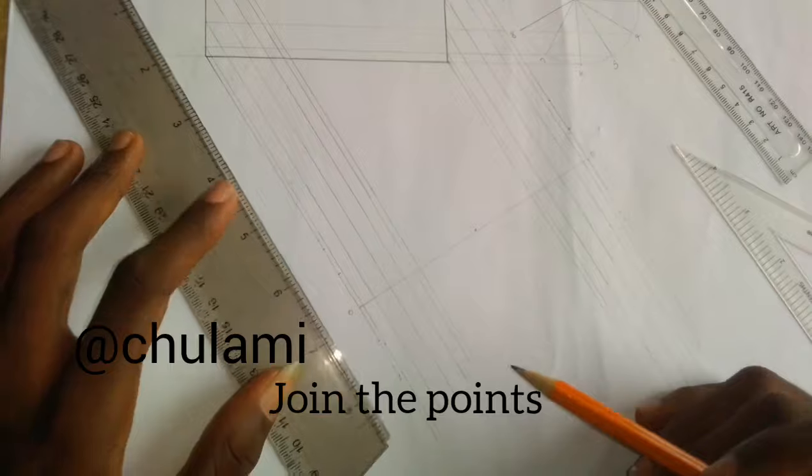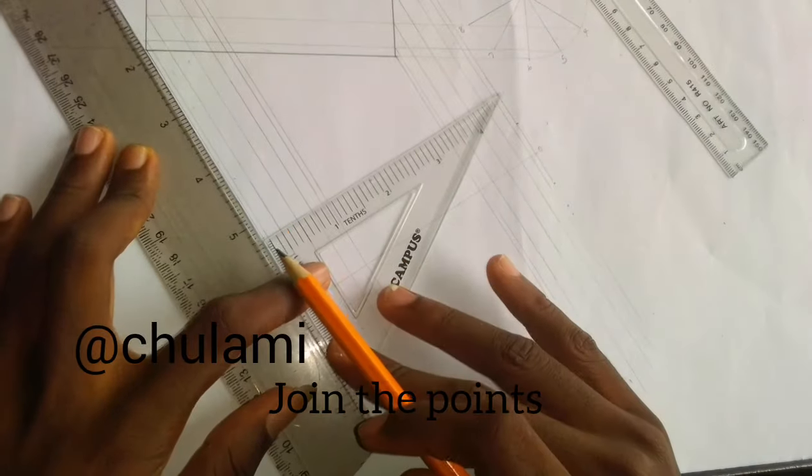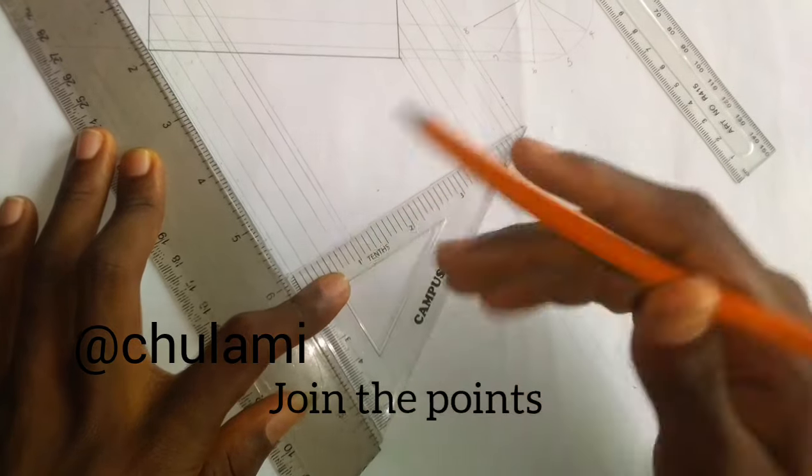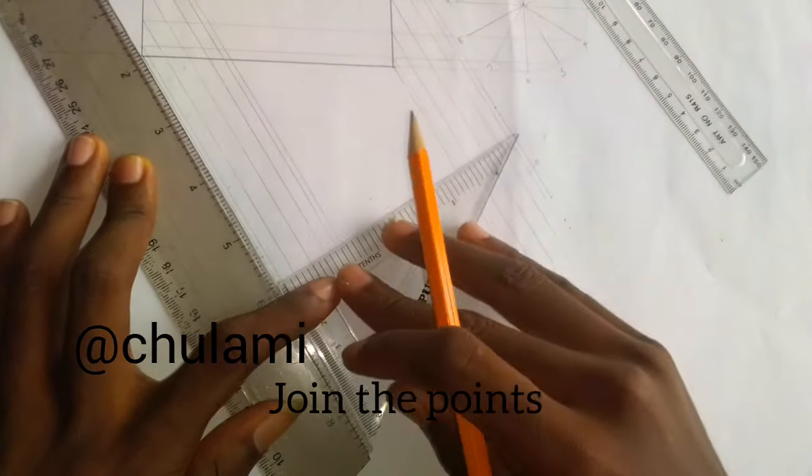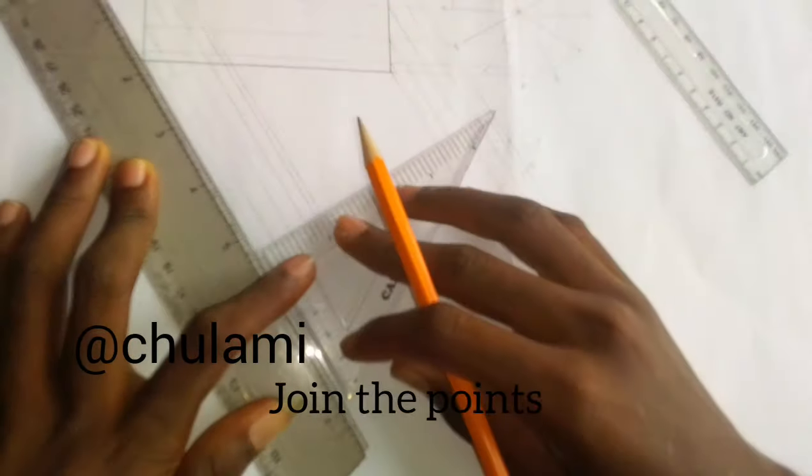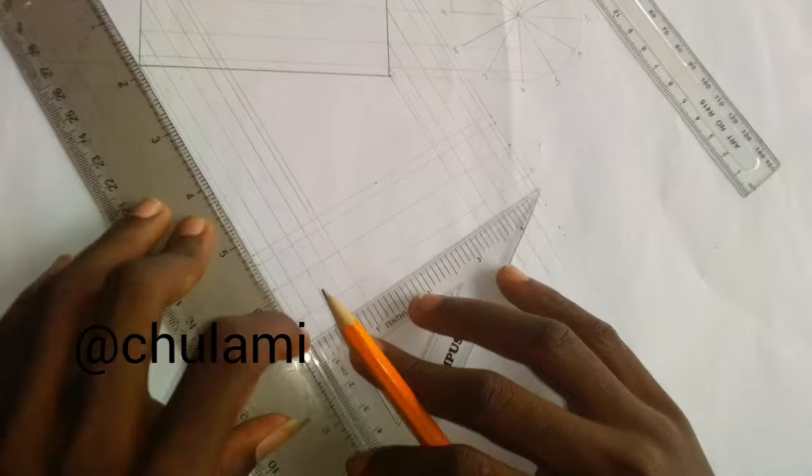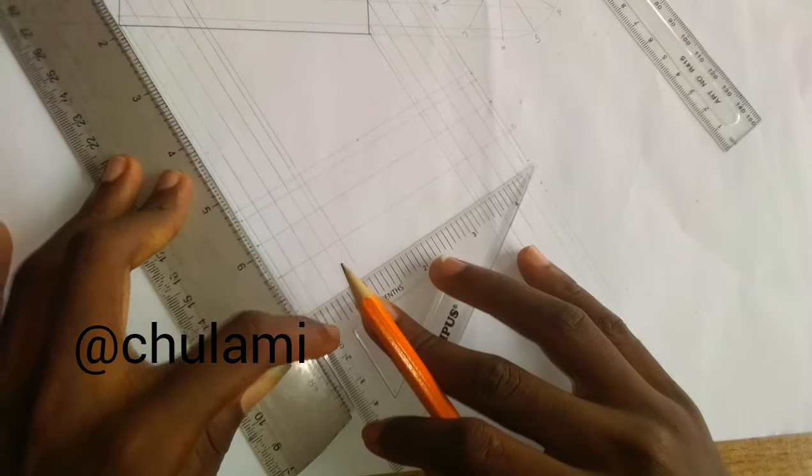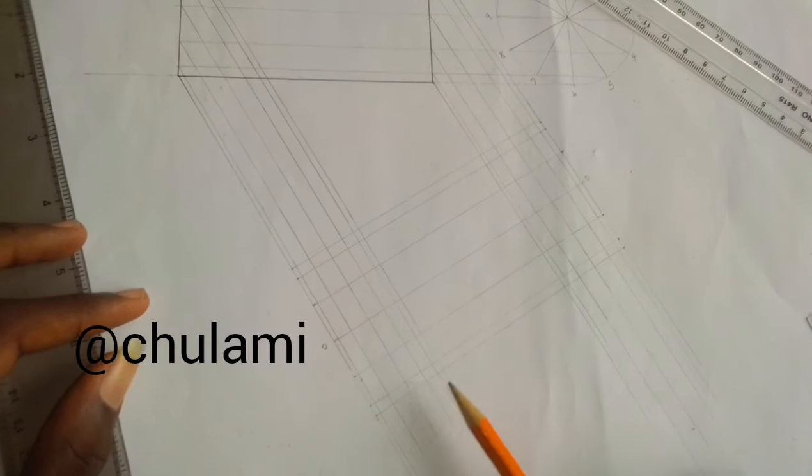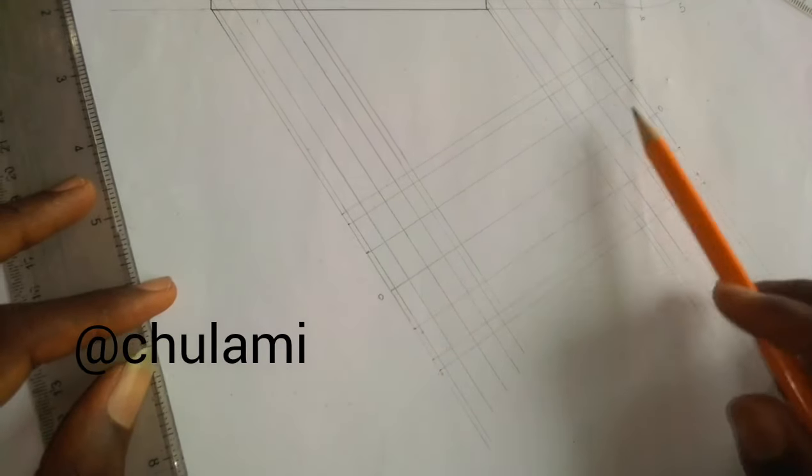The next thing for us to do is to join all these points together. And this is how we join: we join them with this set square. I've joined all the points.